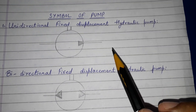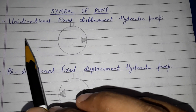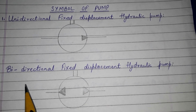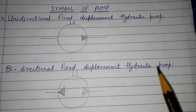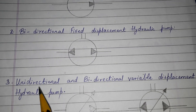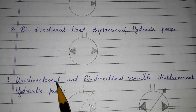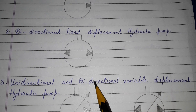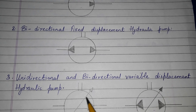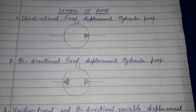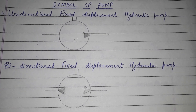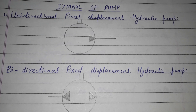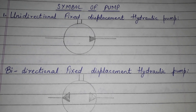So to summarize the symbols of pumps, we covered: unidirectional fixed displacement hydraulic pump, bidirectional fixed displacement hydraulic pump, unidirectional variable displacement hydraulic pump, and bidirectional variable displacement hydraulic pump. These were the symbols of pumps. Hope you like the video — we will meet again in the next video very soon. Till then, goodbye.